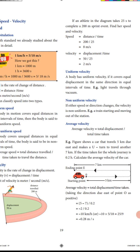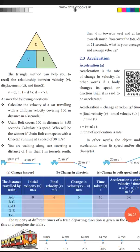Velocity is divided into two types: uniform velocity and non-uniform velocity. Uniform velocity means a body covers equal displacement in the same direction in equal intervals of time. Example: light travels through a vacuum. Non-uniform velocity means if either speed or direction changes, the velocity is non-uniform. Example: a train starting and moving out of a station.